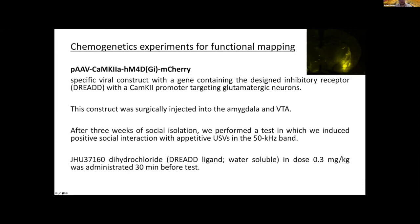We wanted to test the hypothesis that glutamate in the VTA and amygdala has a functional role, so we used chemogenetic experiments for functional mapping. We used a specific viral construct containing the designer inhibitory receptor DREADD with a CaMKII promoter targeting glutamatergic neurons. This construct was surgically injected into the amygdala and VTA, and after three weeks of social isolation we performed a test inducing positive social interaction with appetitive 50 kHz USVs. We administered the ligand CNO (clozapine N-oxide) at 0.3 mg/kg, 30 minutes before testing.